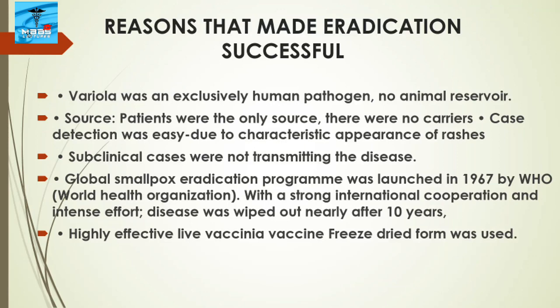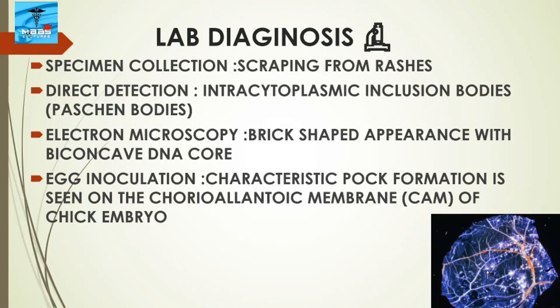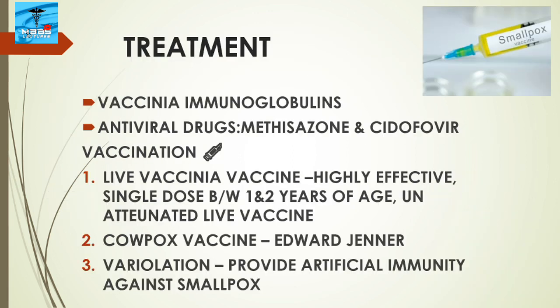Regarding lab diagnosis, specimens collected include scrapings from the rashes. In direct detection from the scrapings, intracytoplasmic inclusion bodies called Guarnieri bodies are observed. In electron microscopy, a brick-shaped appearance with a biconcave DNA core is observed. In egg inoculation, characteristic pock formation is seen on the chorioallantoic membrane of the chick embryo.